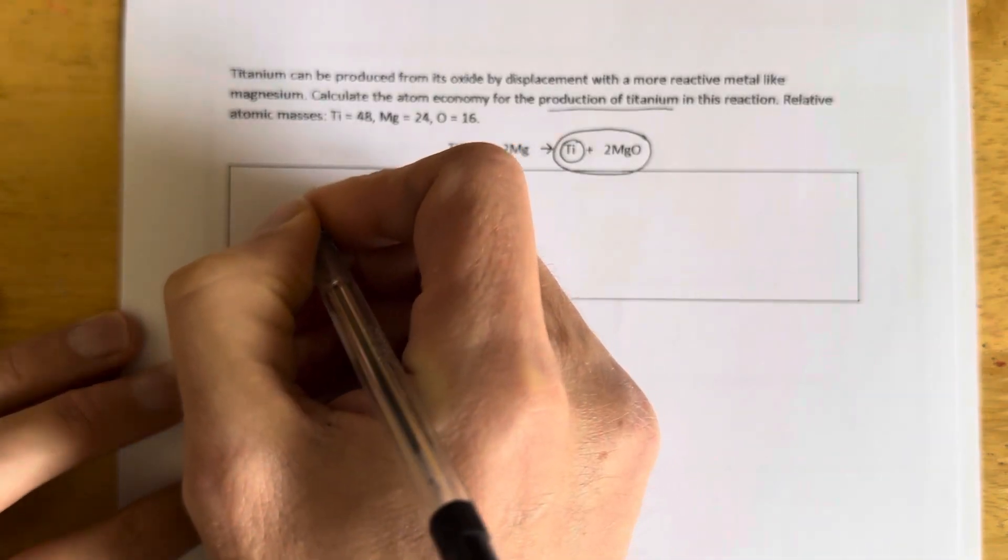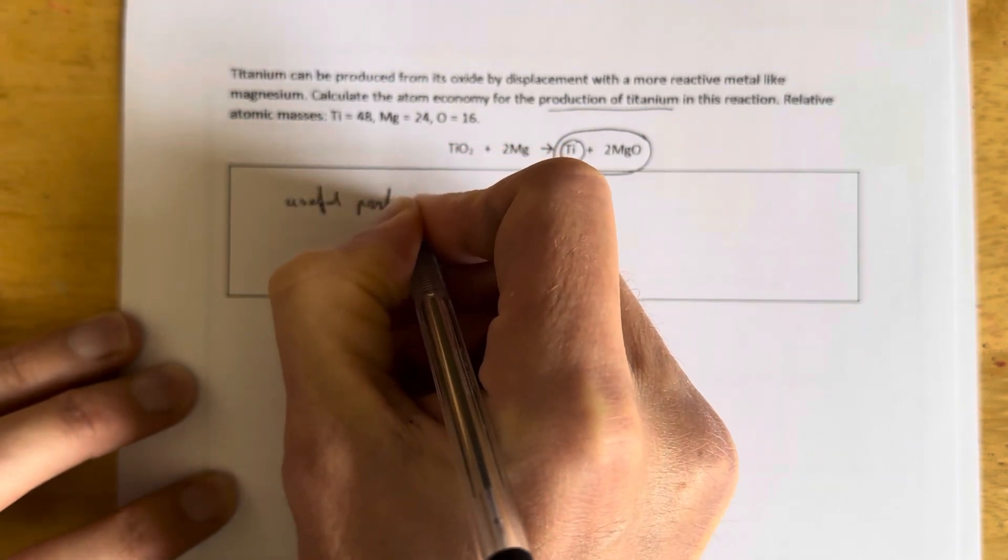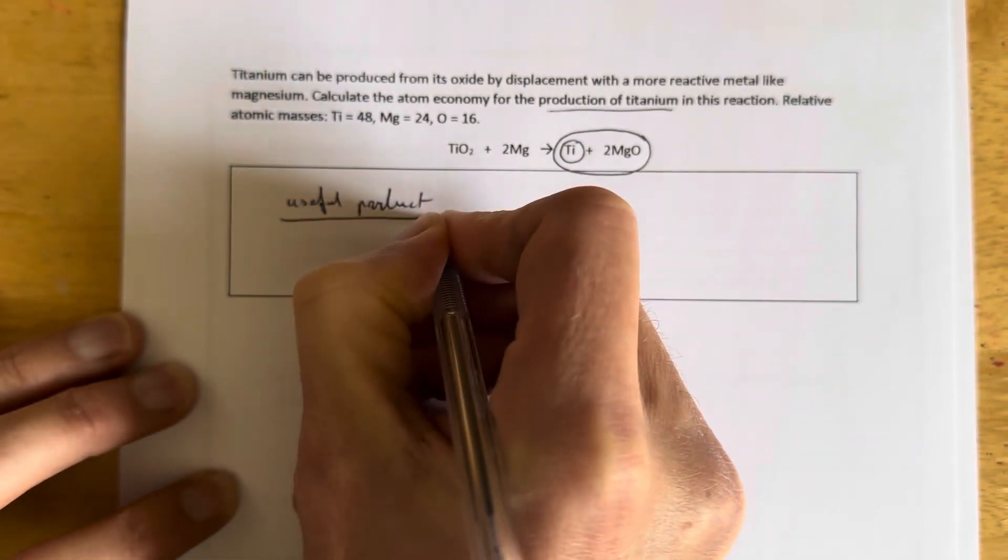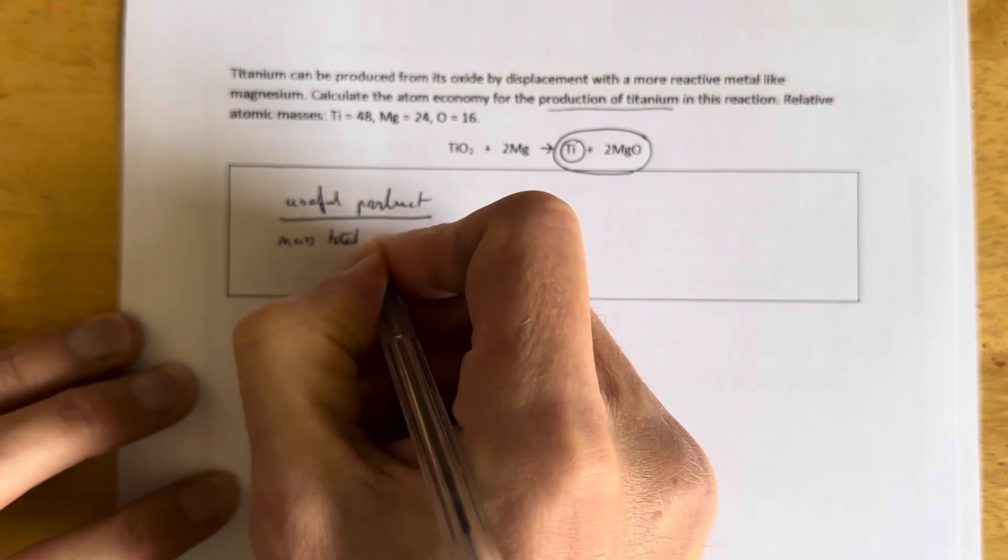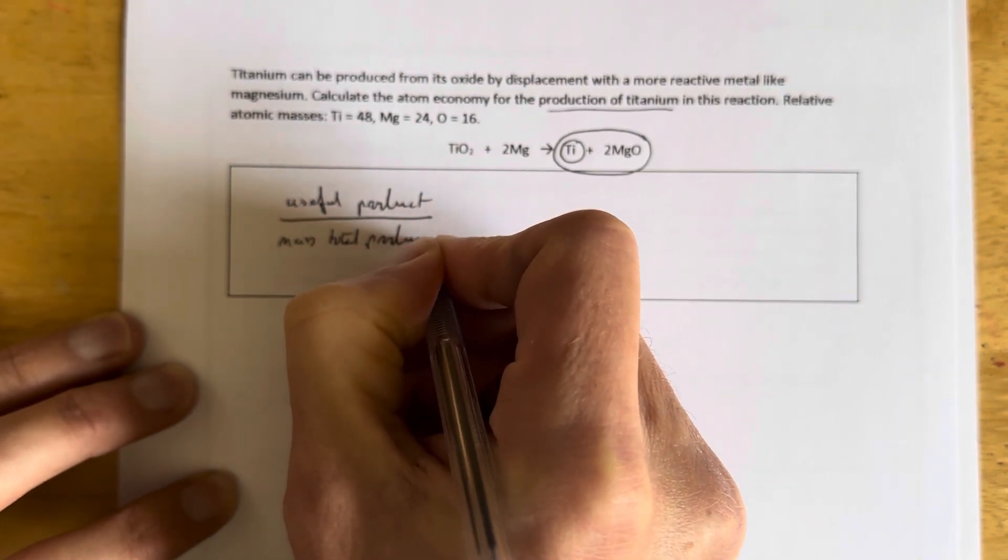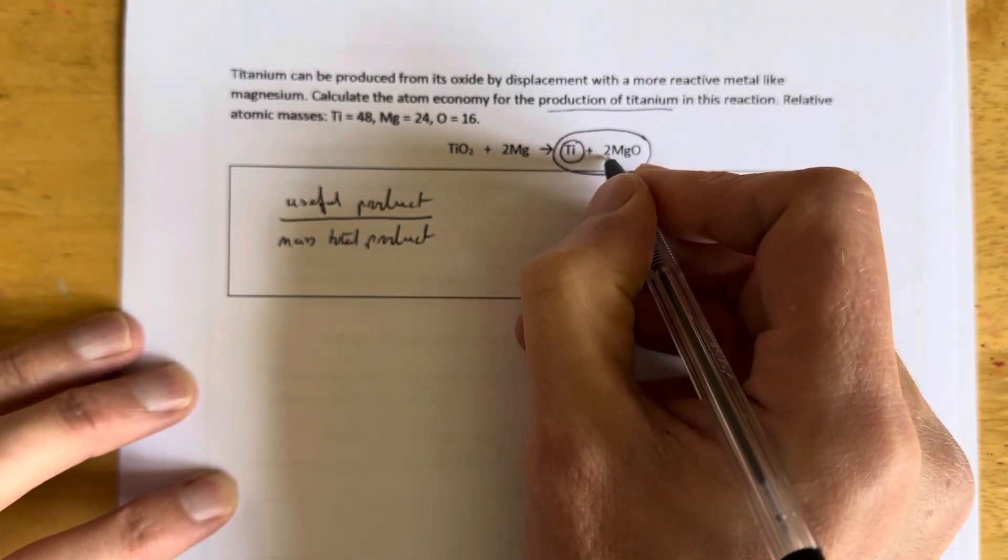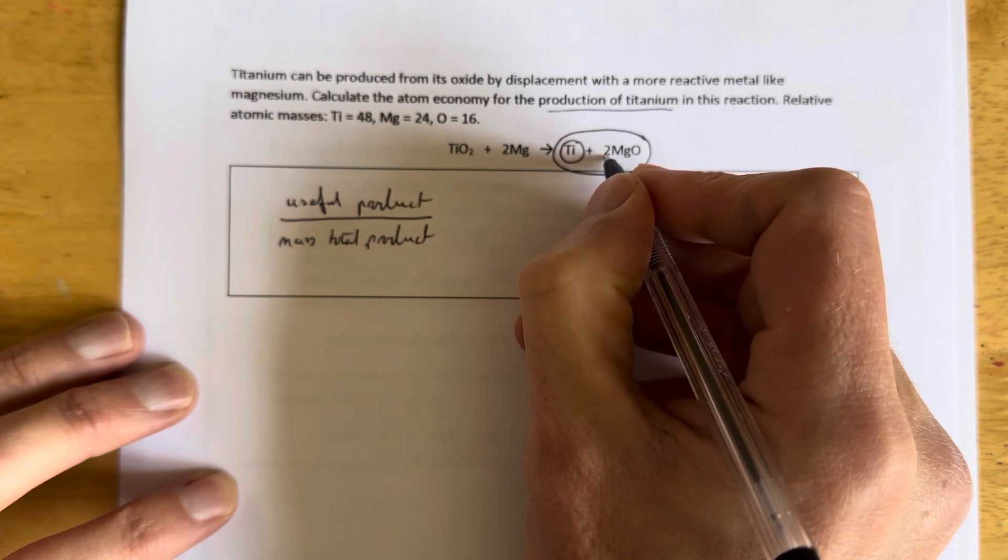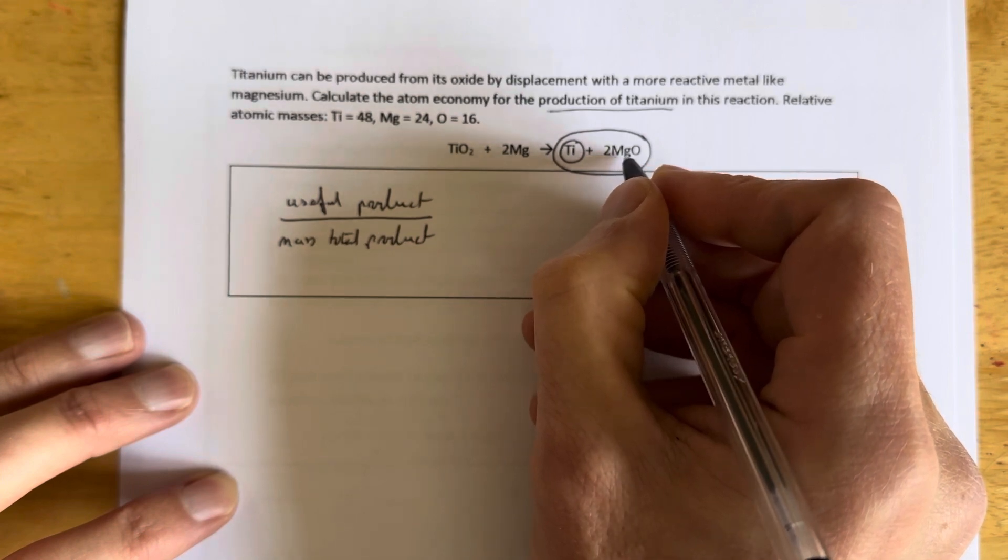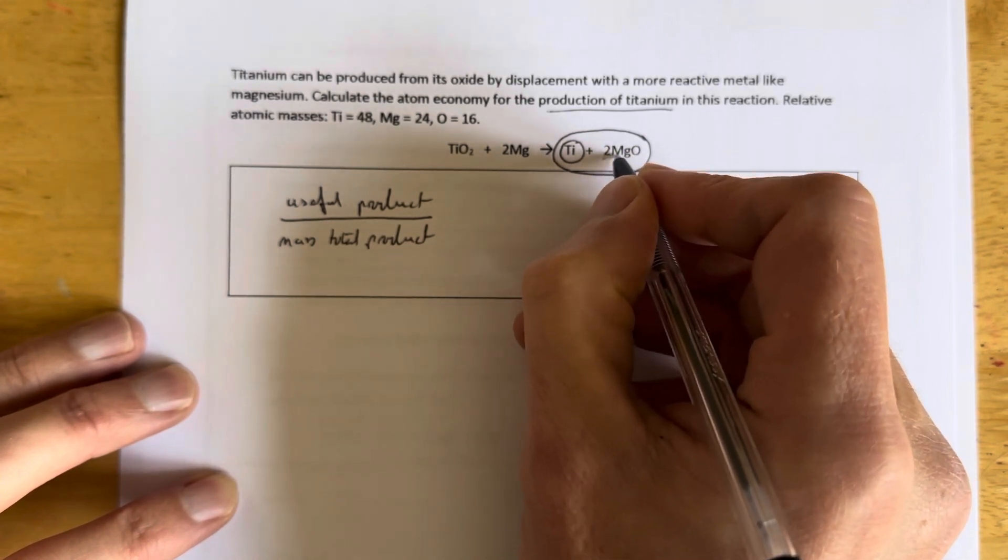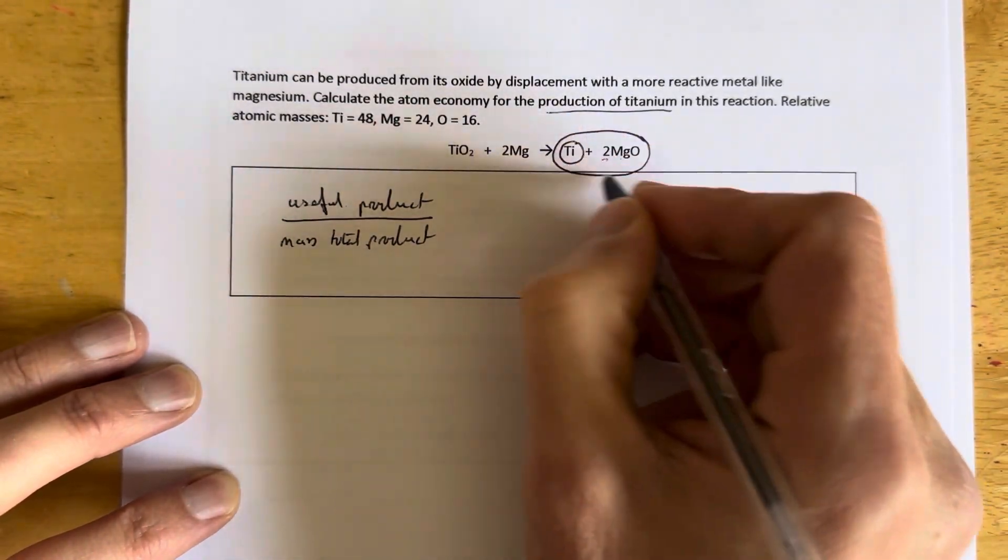So our formula now is going to be the mass of useful product from the equation divided by the total product, the total mass of the total products in this equation. Now the reason I'm stressing total products from the equation is because we're not calculating formula masses when doing this. We're going to involve the stoichiometry numbers as well, the balancing numbers. So the formula mass of magnesium oxide will be magnesium and oxygen but there's actually two magnesium oxide in this equation so we need to use that two as well because we're doing the atom economy for this reaction.